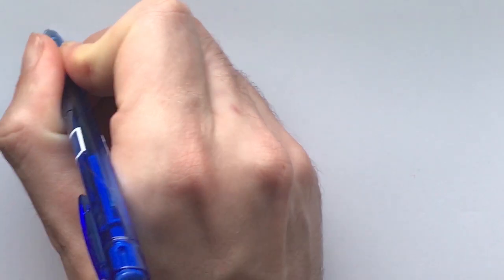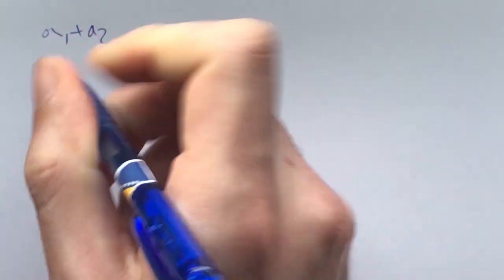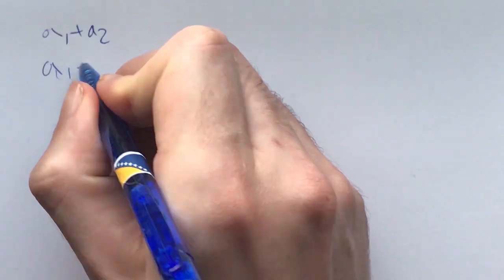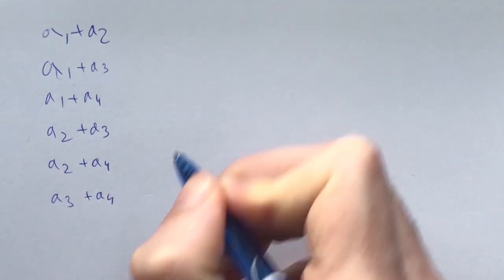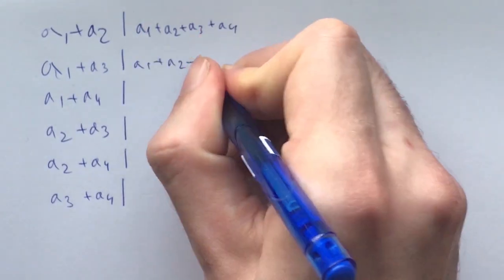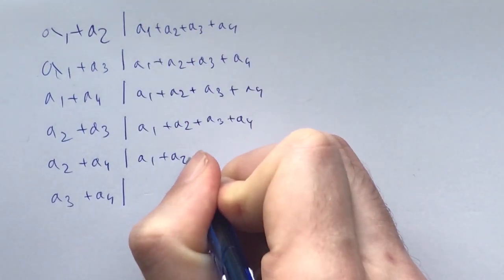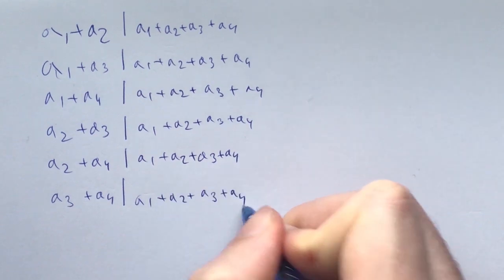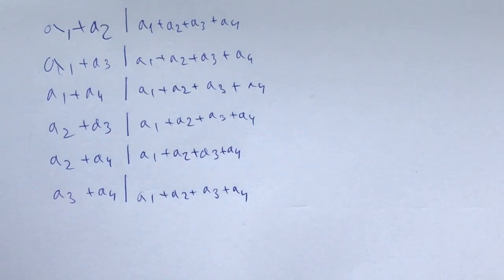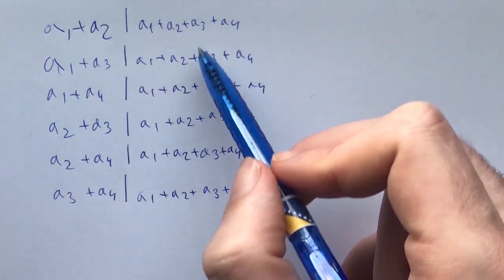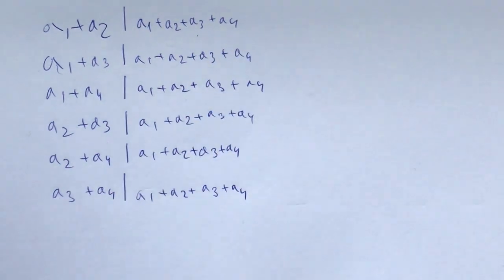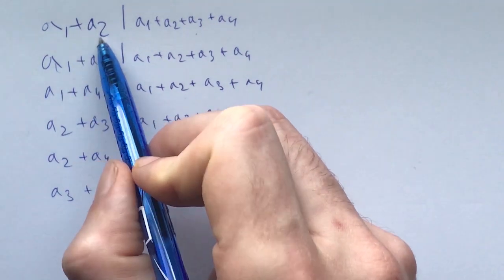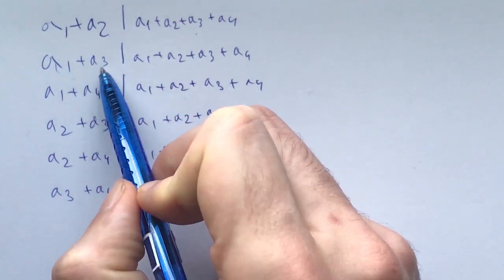So let's begin. In essence, the problem is asking us how many of these pairs can simultaneously divide this sum.